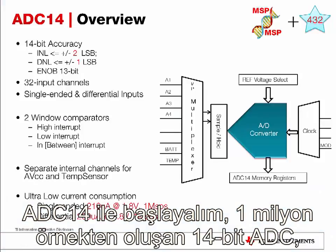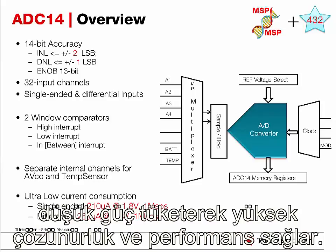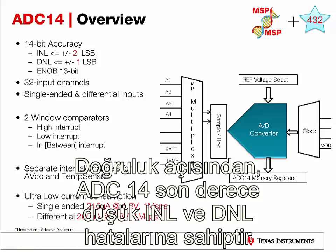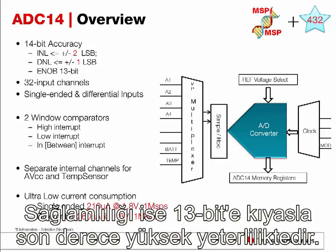Starting with the ADC14, it is a 1 mega sample per second, 14-bit ADC that provides high performance and high resolution while maintaining ultra-low power consumption. In terms of accuracy, the ADC14 achieves extremely low INL and DNL errors while maintaining extremely high ENOB at more than 13 bits.